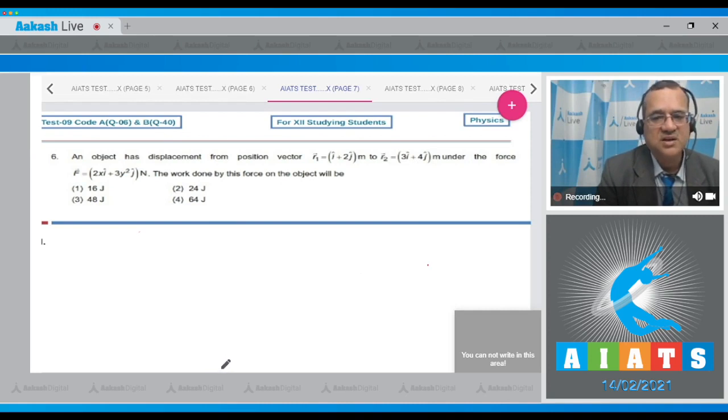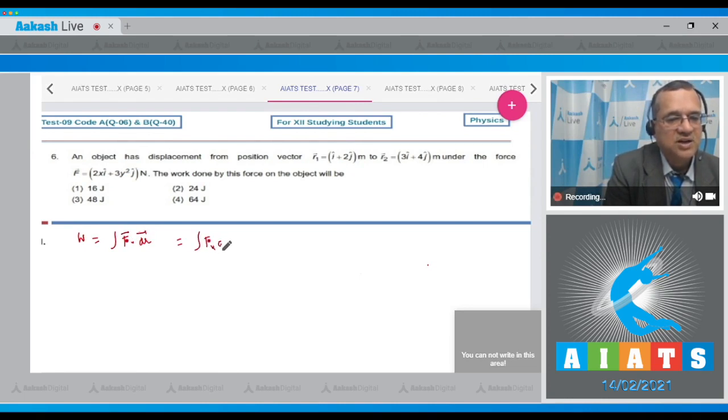Now see dear students that the force is variable so we will use the integration method to calculate work. So W equals integral of F dot dr. Now this becomes equal to fx into dx plus fy into dy because dr equals dx i cap plus dy j cap.